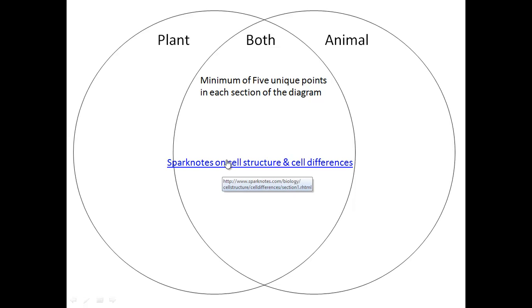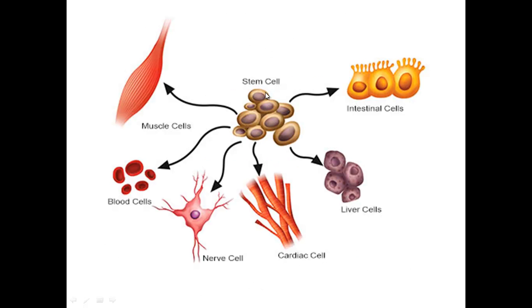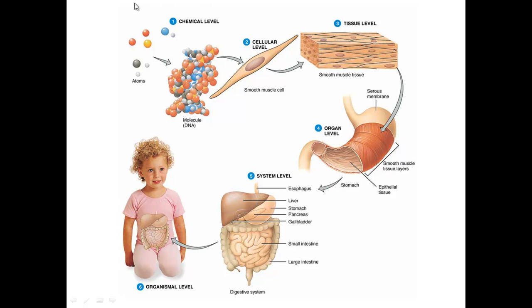The last part talks about stem cells, which don't have a determined fate yet. Chemicals in the body during the embryo stage signal them to become muscles, blood cells, nerve cells, cardiac, liver, or intestinal cells. There are six types of chemicals involved. Remember CHNOPS? They form molecules — monomers and polymers — which make cells, cells make tissue, tissue makes organs, organs make organ systems, and organ systems make organisms. And that's it for Unit 3. Thanks for stopping by.